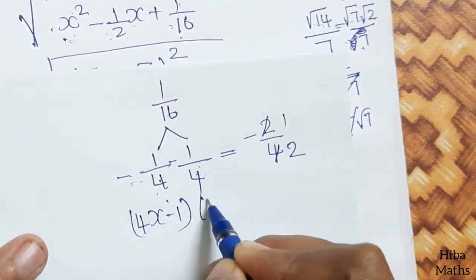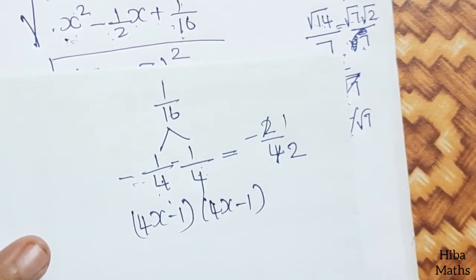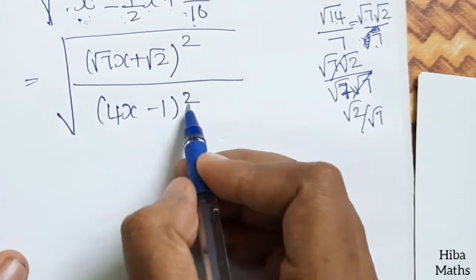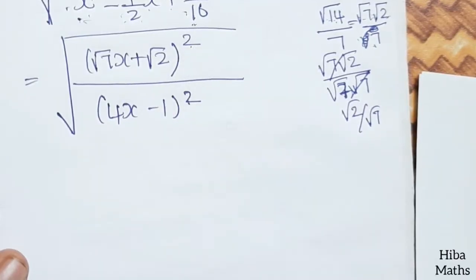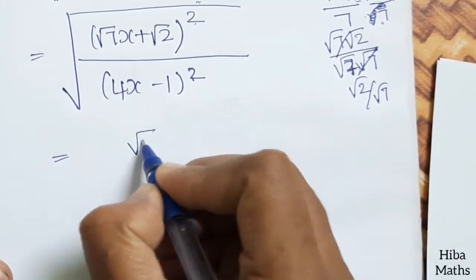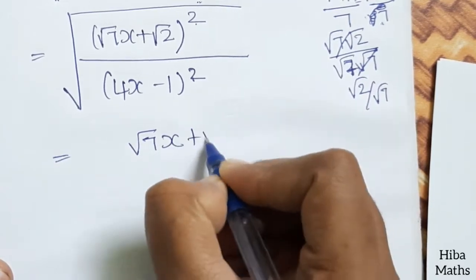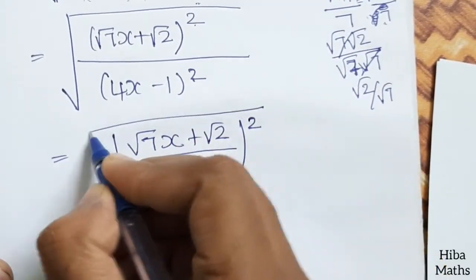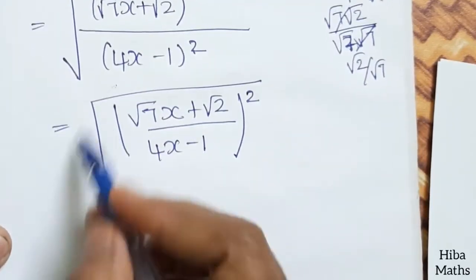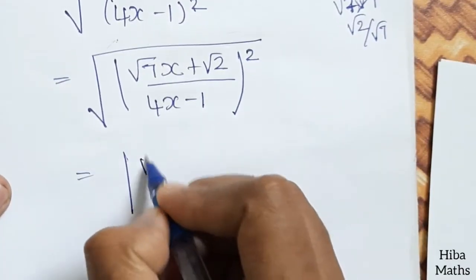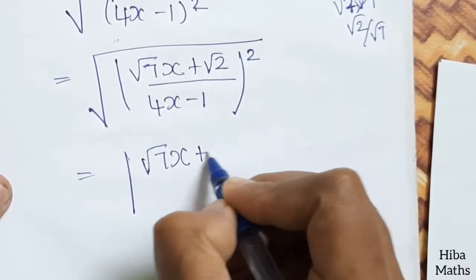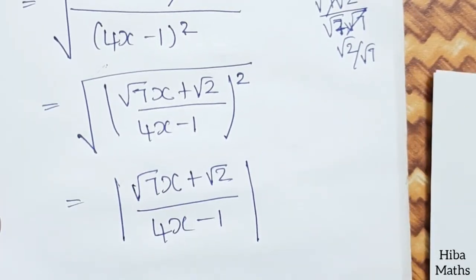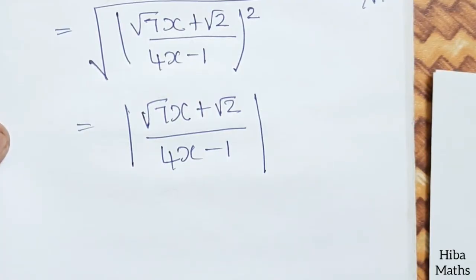The factored form is (4x minus 1) whole square. Now the square root and the square cancel each other out. So the final answer to question 2 is modulus of root 7x plus root 2, divided by (4x minus 1).